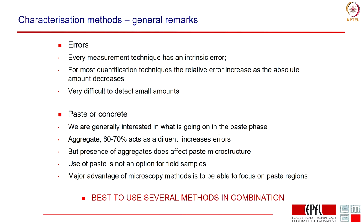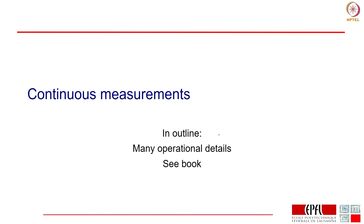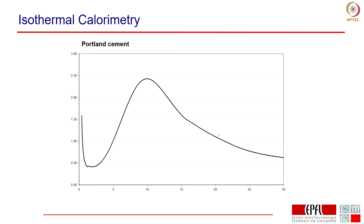As we will see in the case study, you really need to use several methods in combination. You can use one method to check the validity of another method. Looking at continuous methods very briefly — perhaps the foremost technique for following the hydration reaction is isothermal calorimetry. Isothermal calorimetry looks at the heat evolution from a hydrating sample, and this heat evolution is a signature of the reactions going on. The higher the heat evolution, the more reaction we have going on.